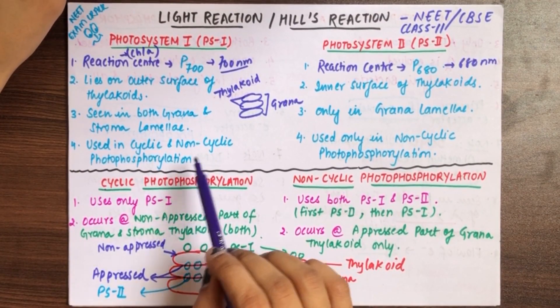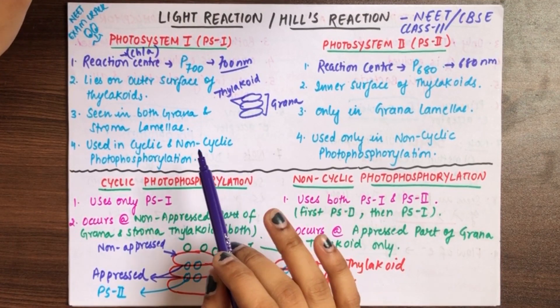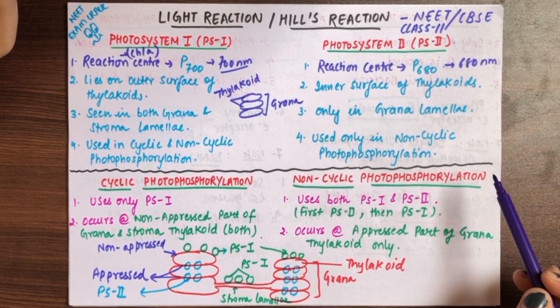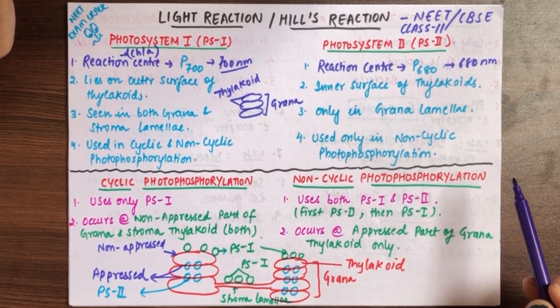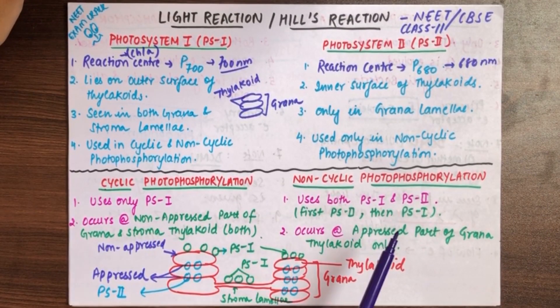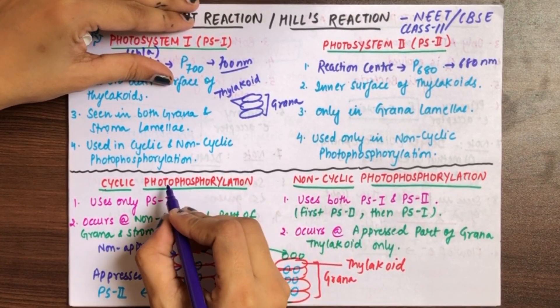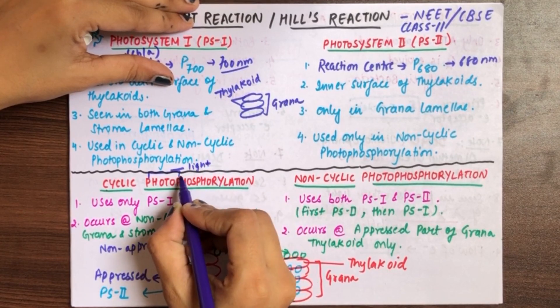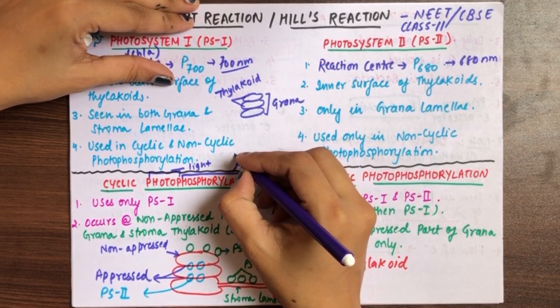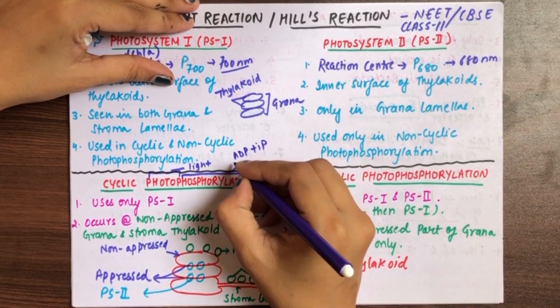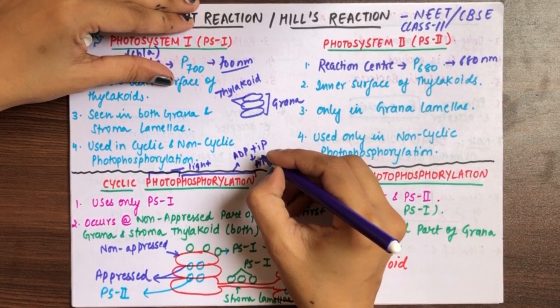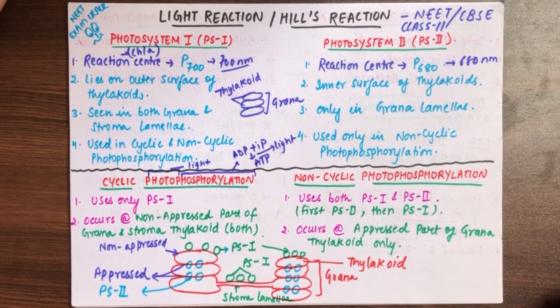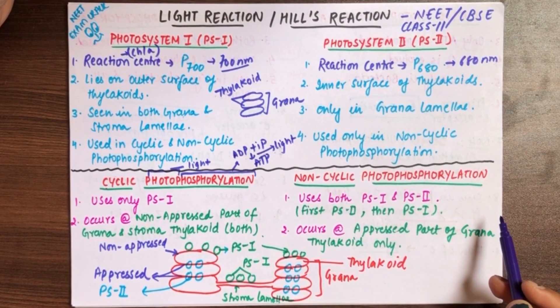Next, photosystem 1 is involved in both cyclic and non-cyclic photophosphorylation. But photosystem 2 is involved only in non-cyclic photophosphorylation. They do not have any kind of role in cyclic. Now see, cyclic and non-cyclic are two types of photophosphorylation. First, you can understand what photophosphorylation is. Photophosphorylation means ATP synthesis from ADP and inorganic phosphate in presence of light.